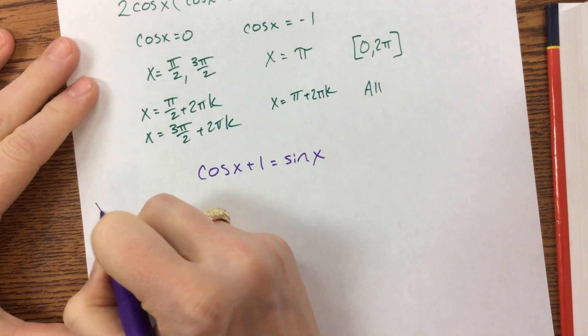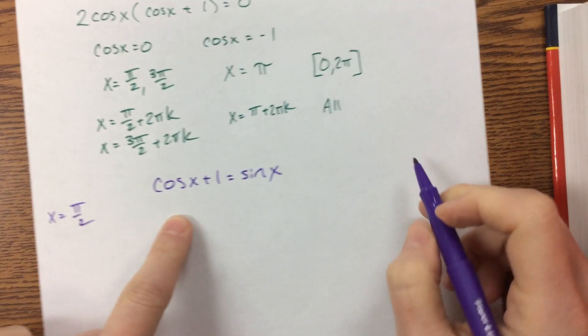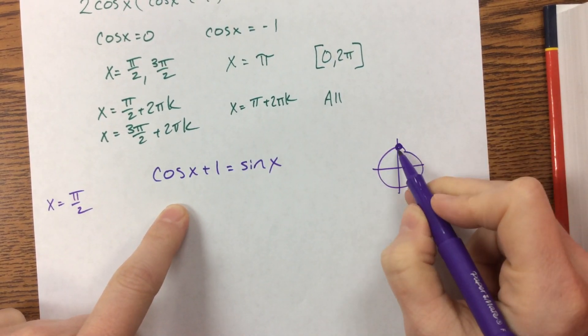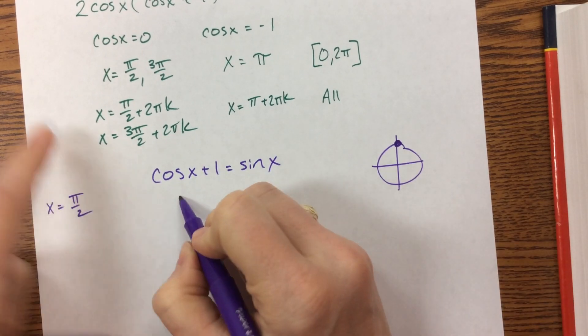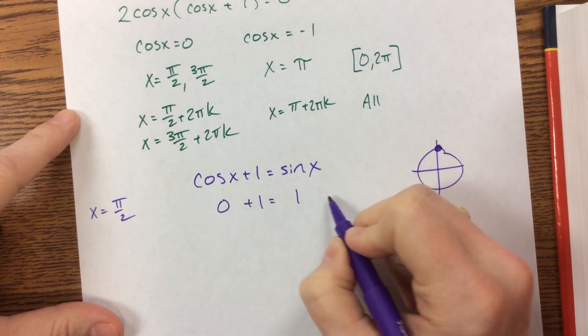So I first found that x is equal to pi over 2. When I plug in pi over 2, I'm thinking unit circle. Cosine of pi over 2 up here. We didn't move left or right. That's 0 plus 1 is equal to sine. Right here is positive 1. That works.